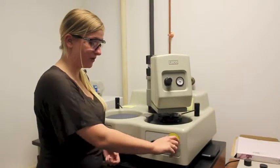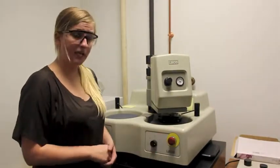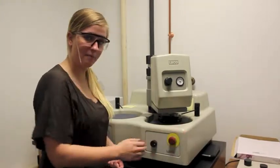In order to turn on the Spectrum System 1000, you want to rotate the red button clockwise. It will pop out and also serve as an emergency stop button.